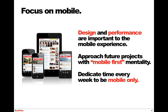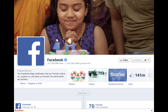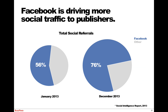Now that we understand the environment and some of the trends, let's talk more specifically about some of the platforms. Facebook — I don't really need to ask how many people watching this are on Facebook, it's probably most or all of you. Facebook is a major source of traffic. According to the Social Intelligence Report, Facebook is driving more social traffic to publishers. In the beginning of 2013, 56% of total social referrals to our partner network content was being driven by Facebook. By December, that had grown to 76%. Not only has the proportion grown, but the raw number of social referrals has grown too — they're driving a bigger slice of a bigger pie.